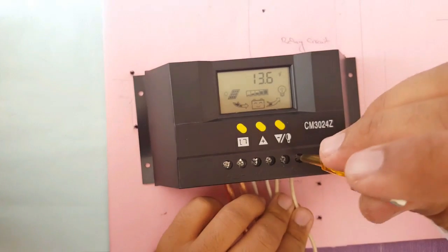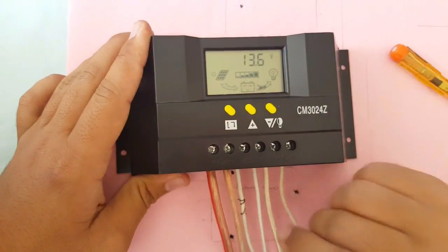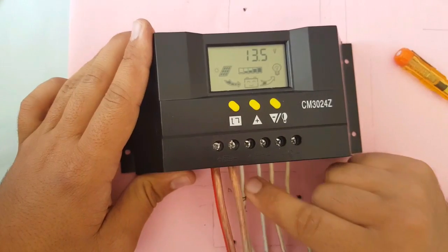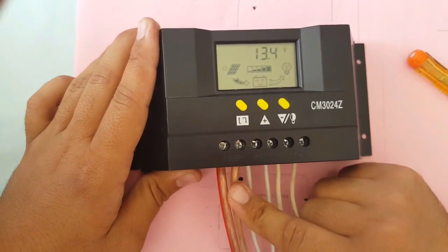An arrow blinking will be shown on the screen. It means that a load is connected to the solar charge controller. Now your controller is successfully installed in your setup.